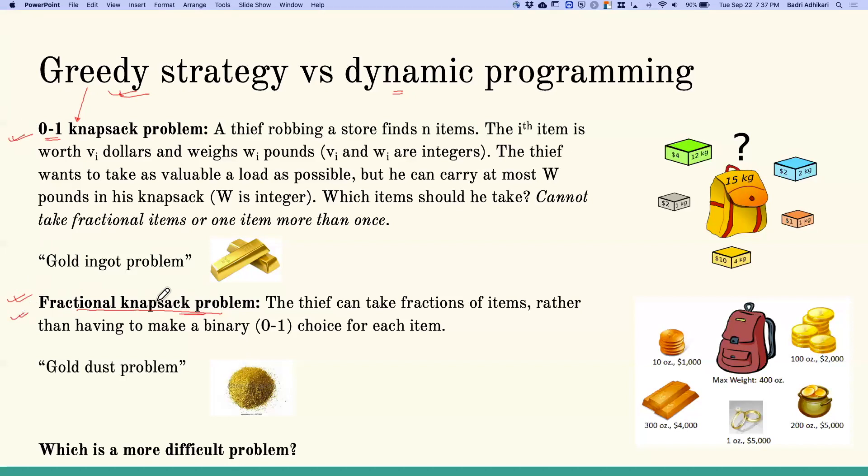To solve the fractional knapsack problem is actually very easy. Since we can easily calculate the value per pound or value per weight, say we have a total weight capacity of 400 pounds. We can find the item that has the maximum value per pound. Then we start by loading the item that has the maximum value per pound into the knapsack.